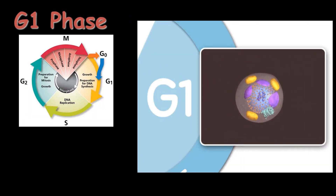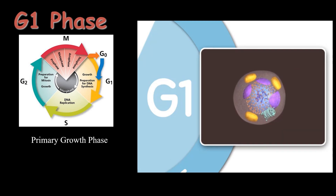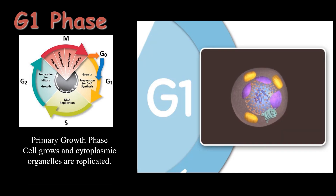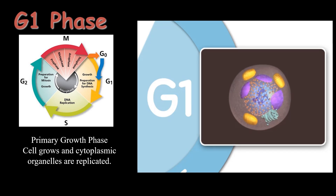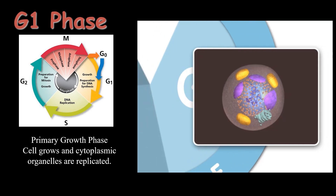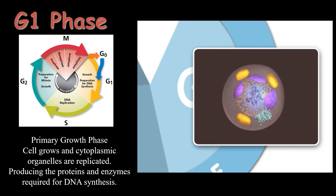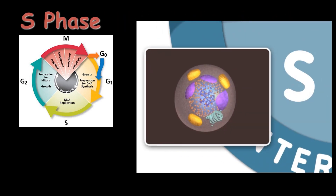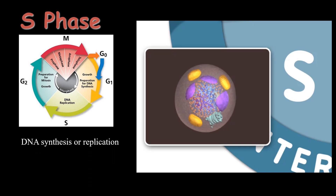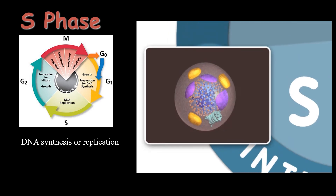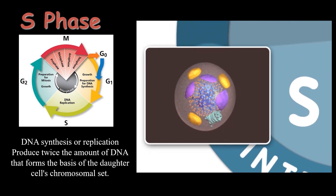First, the G1 phase — also known as the primary growth phase — in which duplication of cytoplasmic organelles takes place and the cell grows in size. All preparation of the cell for the next phase, the S phase, is completed in G1. The cell then goes to the S phase, also known as the synthesis or replication phase, in which the DNA material is duplicated and doubled so that it can be divided into daughter cells.